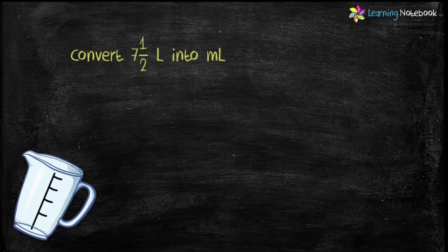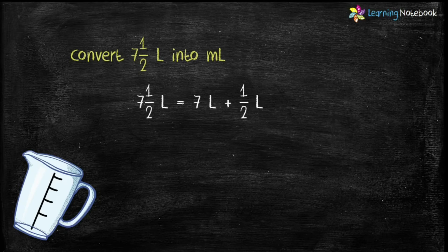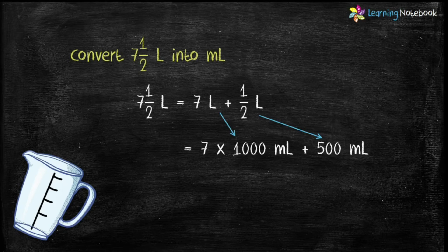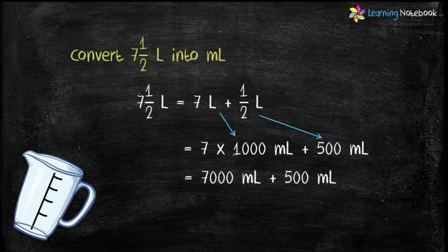Next question: convert 7 and a half liters into milliliter. Seven and a half liters means 7 liters plus half a liter. One liter equals 1000 ml, so 7 liters equals 7000 ml. We know half a liter equals 500 ml, so 7000 plus 500 equals 7500 milliliter.